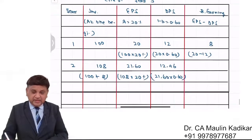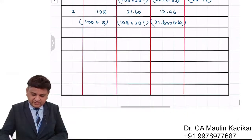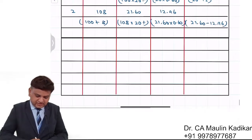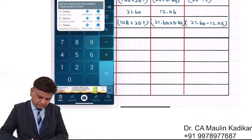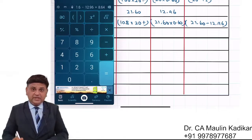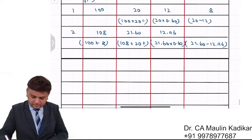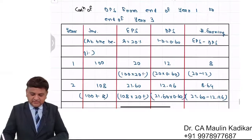Retained earning at the end of the second year is 21.6 minus 12.96, which is 8.64. That is the retained earning at the end of the second year.